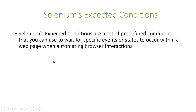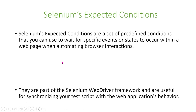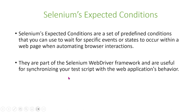In today's video, we will be talking about Selenium's expected conditions. Selenium's expected conditions are a set of predefined conditions that you can use to wait for specific elements, events, or states to occur within a web page when automating your browser interactions. These are part of the Selenium WebDriver framework and are useful when you want to synchronize your test script with the web application's behavior.